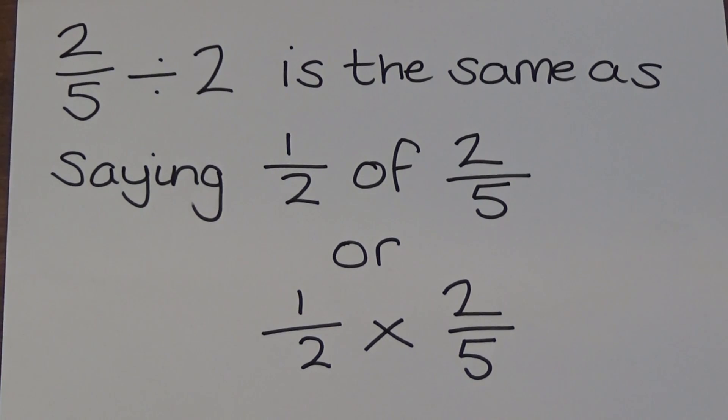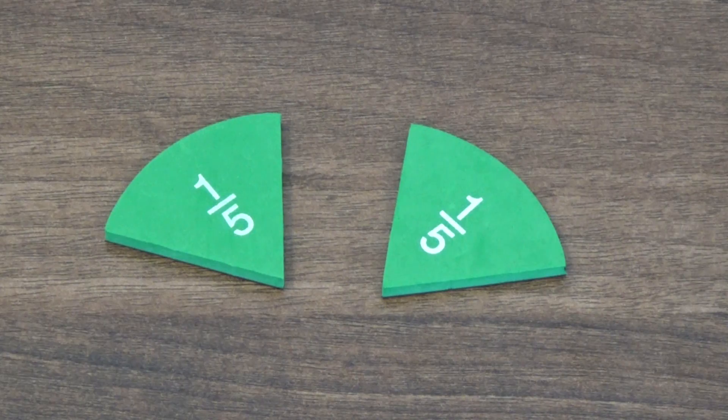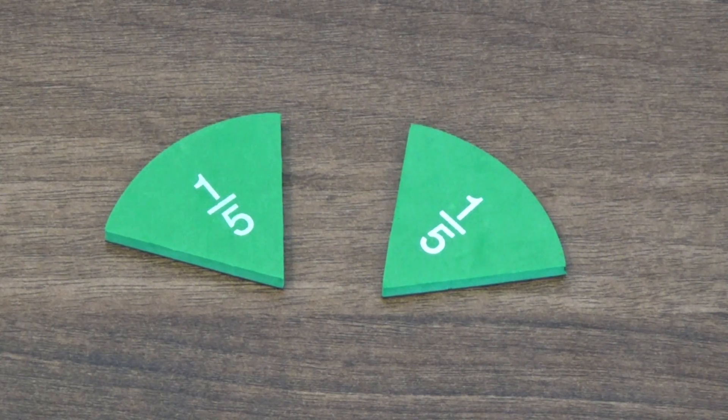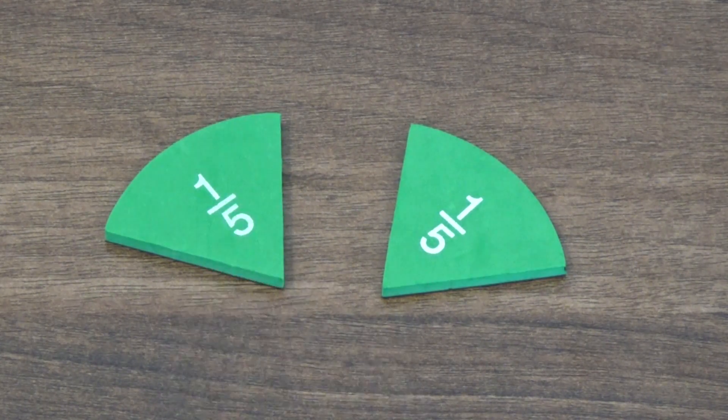Dividing two fifths by two is the same as saying a half of two fifths or a half times two fifths. If we look at our fraction circles, a half of two fifths is one fifth.